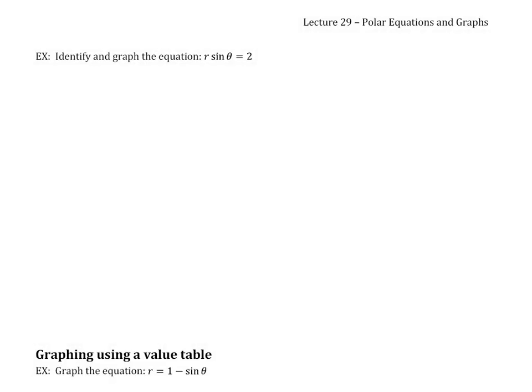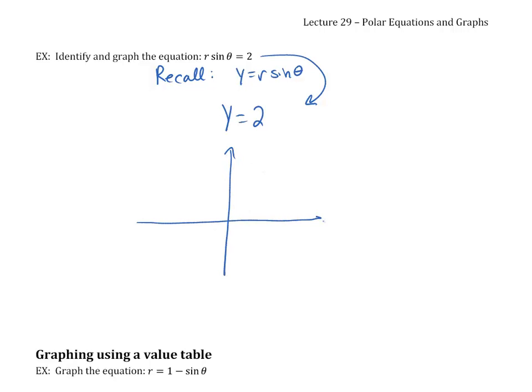Unlike the first two examples, there is really no intuition for the next equation without converting to rectangular. Recall that y = r·sinθ is one of our reference formulas. So if the equation is r·sinθ = 2, it becomes y = 2. To graph this, every point has a y-coordinate of 2, which is a horizontal line at y = 2.